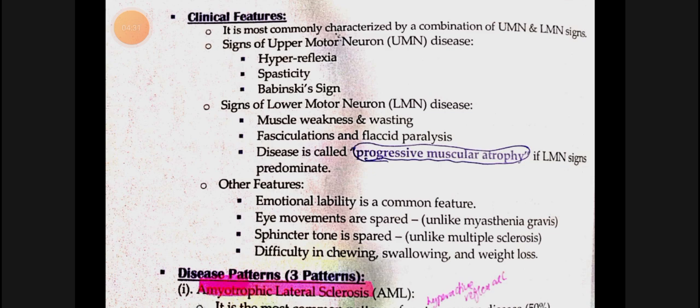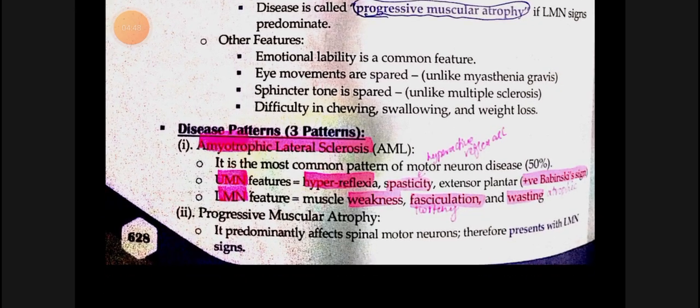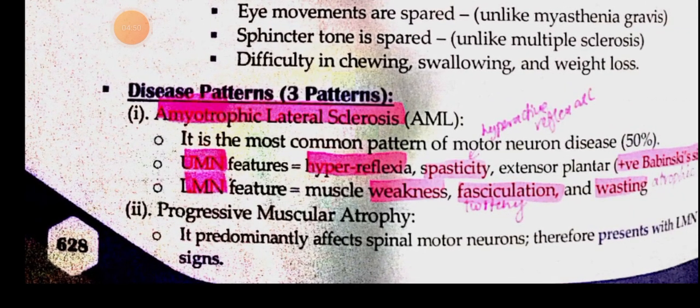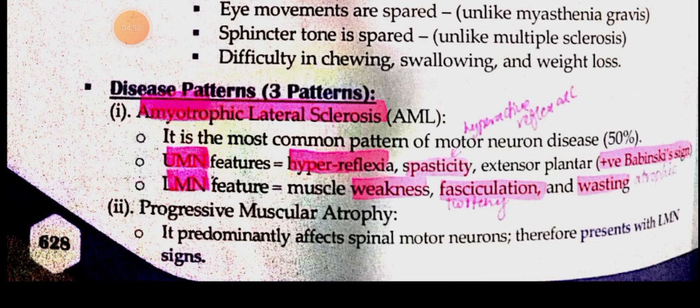Other features include emotional lability. Eye movements are not affected, and sphincter tone is also not affected. There are problems with chewing and swallowing, and weight loss occurs. There is one important disease: amyotrophic lateral sclerosis (ALS), which is the most common pattern of motor neuron disease. In ALS, both upper and lower motor neuron features appear.